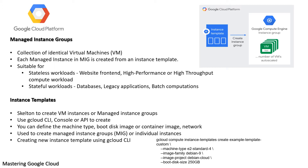You can use the gcloud command line interface, console, or API to create an instance template. Instance templates let you define the machine type, boot disk image or container image, network, and other instance properties to use when creating virtual machine instances. You can create instance templates to create instances in a managed instance group or create individual instances.